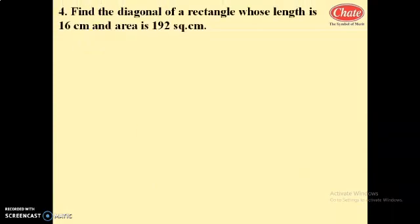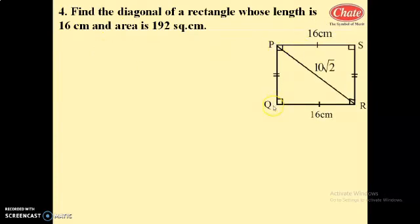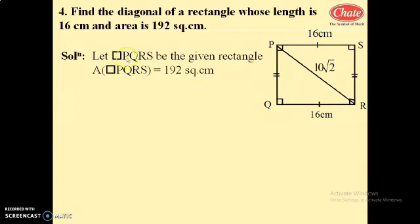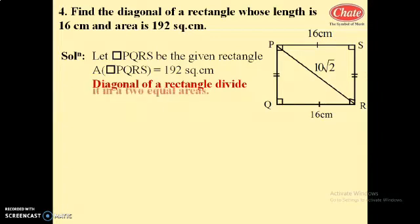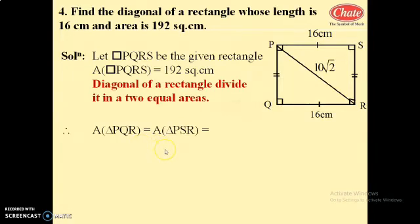Next, question number 4: find the diagonal of a rectangle whose length is 16 centimeters and area is 192 square centimeters. We draw rectangle PQRS. QR equals 16 centimeters. Area of rectangle PQRS is 192 square centimeters. The diagonal PR divides the rectangle into two equal triangles, so area of triangle PQR equals half the area of quadrilateral PQRS.